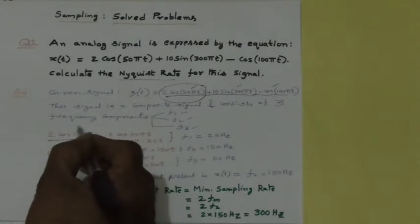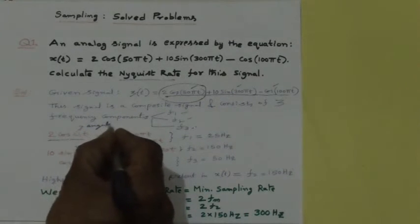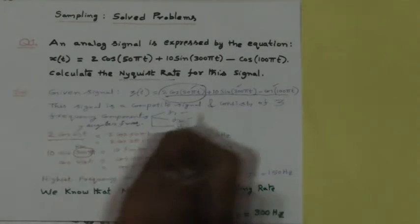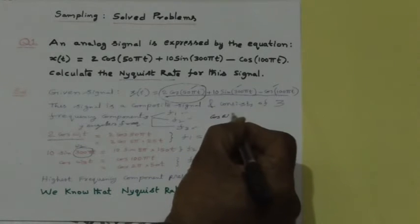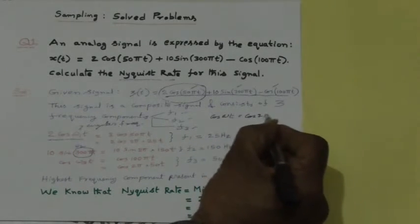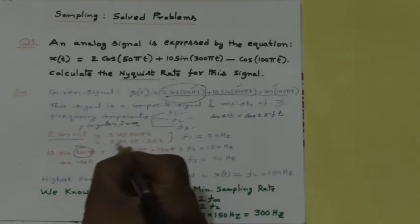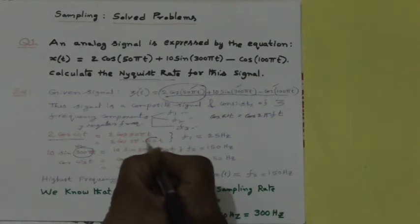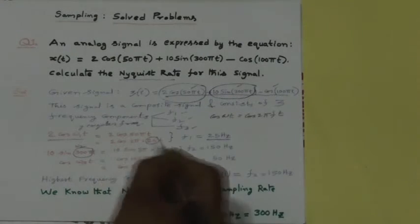Taking the first frequency component 2cos(ω₁t), where omega is the angular frequency measured in radians per second. We convert 2cos(55t) using the relation cos(ωt) = cos(2πft), giving 2cos(2π × 25t), so F1 = 25 Hz. Similarly, converting 10sin(350t) gives F2 = 150 Hz, and the third component gives F3 = 50 Hz.